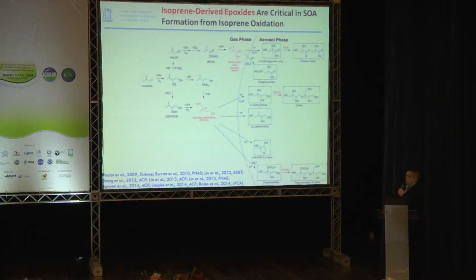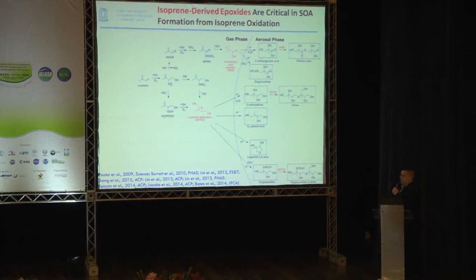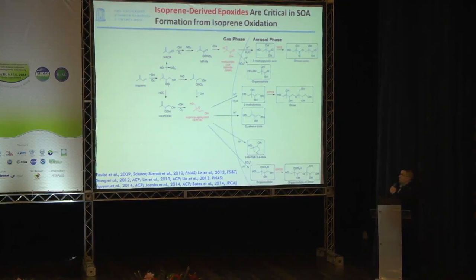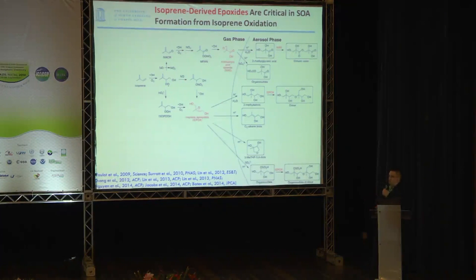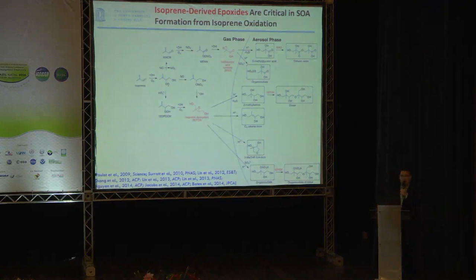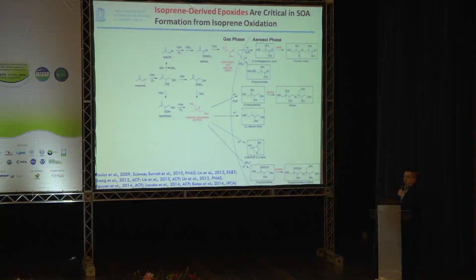This is our current picture of how SOA formation occurs from isoprene oxidation. Once isoprene is emitted from the surface, the primary reaction pathway is through the hydroxyl radical chemistry. Once we make the initial peroxy radical, the fate of this radical dictates the type of SOA you're going to get from isoprene. In particular, the level of nitrogen oxides present in the atmosphere determines the pathway. Under high NO, you go through the methacrolein pathway where it further oxidizes to give you PAN. We've shown through laboratory studies and modeling that you can get methacrylic acid epoxide, and then that goes on to make some of these known aerosol phase tracers.